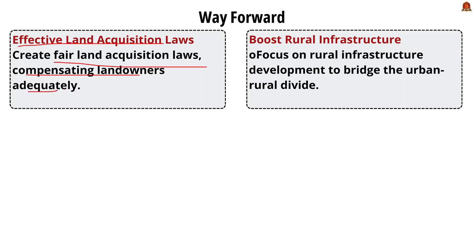The fifth way forward is boosting rural infrastructure. Beyond developing national highways, ports, and railways, the government should also focus on rural infrastructure to bridge the urban-rural divide. This will provide better market access for farmers and weaker sections in remote areas. These are the way forward points for challenges in infrastructure development.